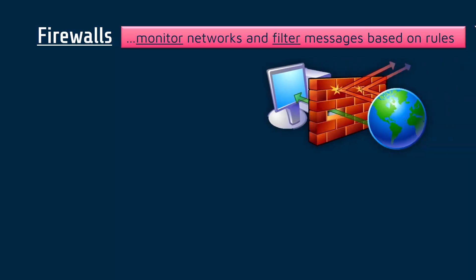The name firewall sounds kind of cool, but also the actual job of a firewall inside a house is to stop a fire spreading from one room to another via the wall. Similarly, a network firewall stops malicious messages — maybe denial of service messages, maybe messages containing malware — spreading from one area to another, usually from the internet to internal networks.